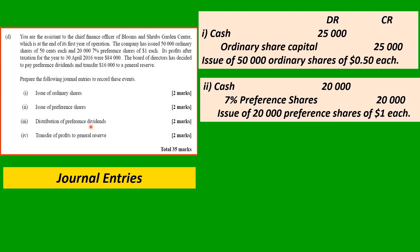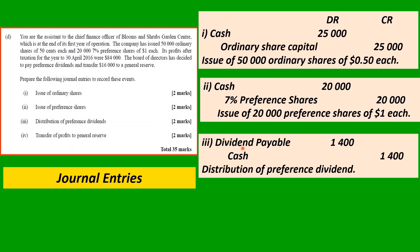For the distribution of preference dividends — note this is distribution, not declaration. The declaration would have taken place earlier, placing the amount in a liability account. Therefore: debit Dividend Payable $1,400 (7% × $20,000), credit Cash $1,400. Notice it's 'dividend payable' — not just 'dividend.' If you write 'dividend' alone, it means you are declaring it. Narrative: distribution of preference dividend.